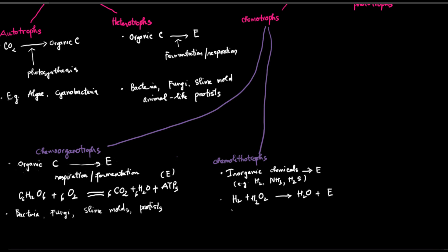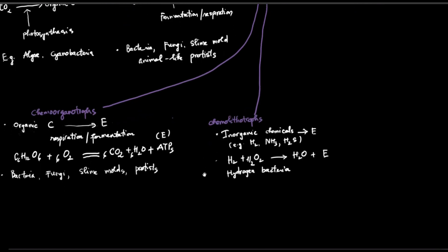Hydrogen bacteria can oxidize hydrogen gas into water and energy. Other bacteria which are chemo-lithotrophic include nitrogen-fixing bacteria and sulfur bacteria.